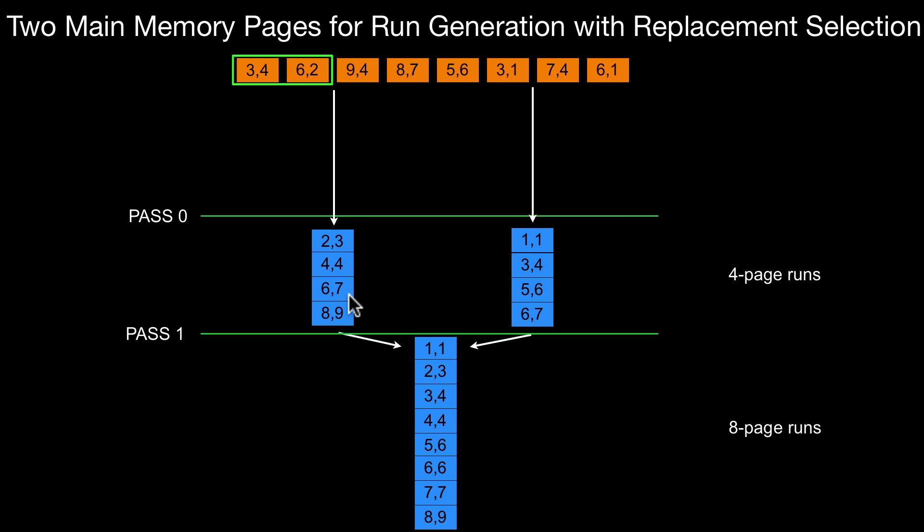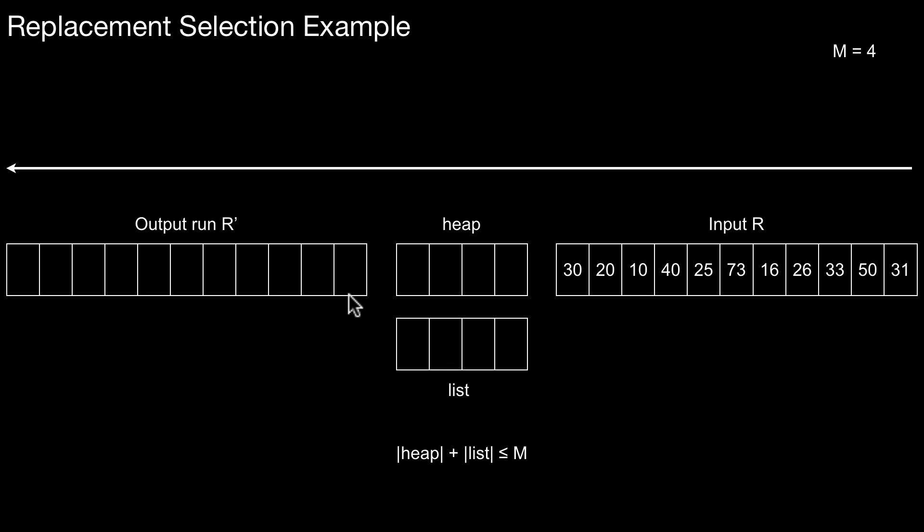So how does replacement selection work? Let's assume the following input. So we have an input queue R. And we process the elements here from left to right. So this 30 here is the first element we are going to look at. I assume that we have space available for four elements in main memory. And I assume that I use two structures, a heap and a list. So at all times, this condition must hold: the number of elements in the heap plus the number of elements in the list must be smaller equal this M. At most, four elements.